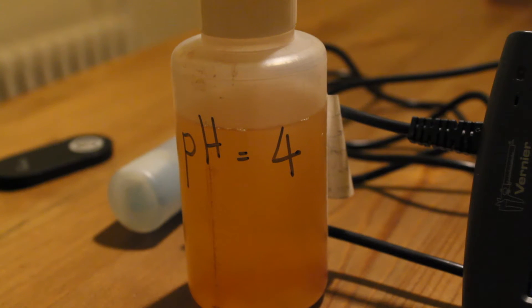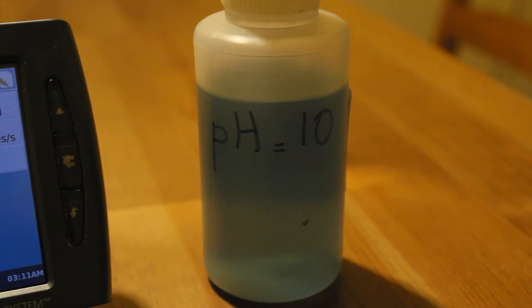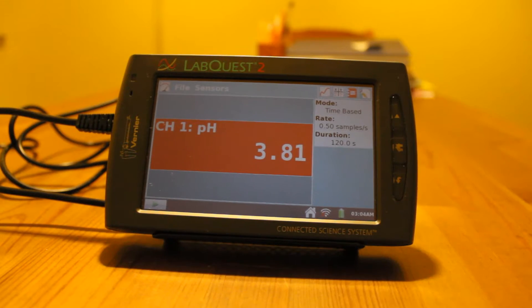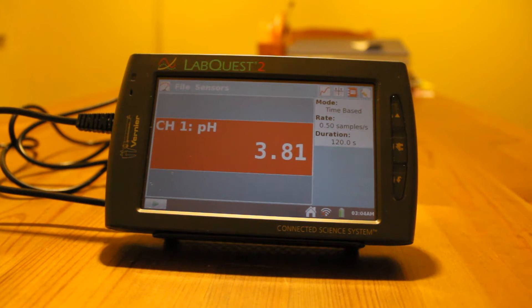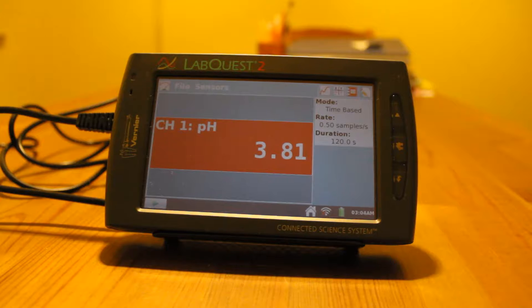You will need two buffer solutions of pH 4 and 10, as we are going to perform a two-point calibration. Buffer solutions are prepared using the buffer tablets which can be purchased from Merlin or Boreal.